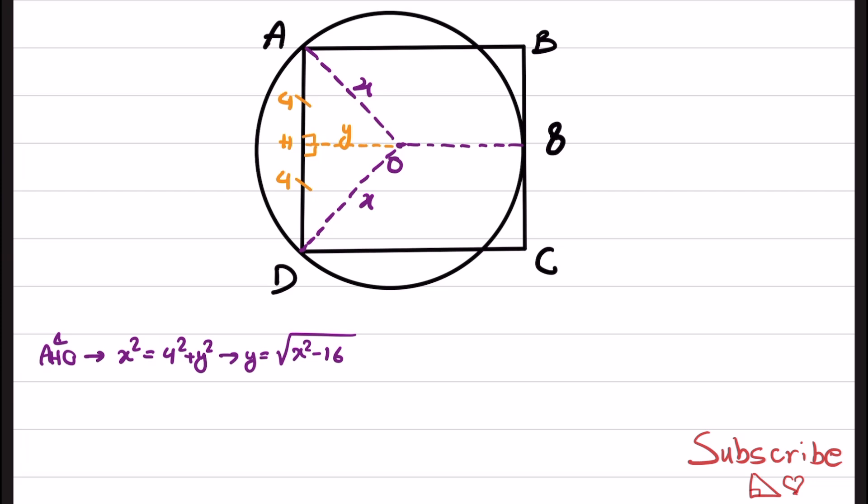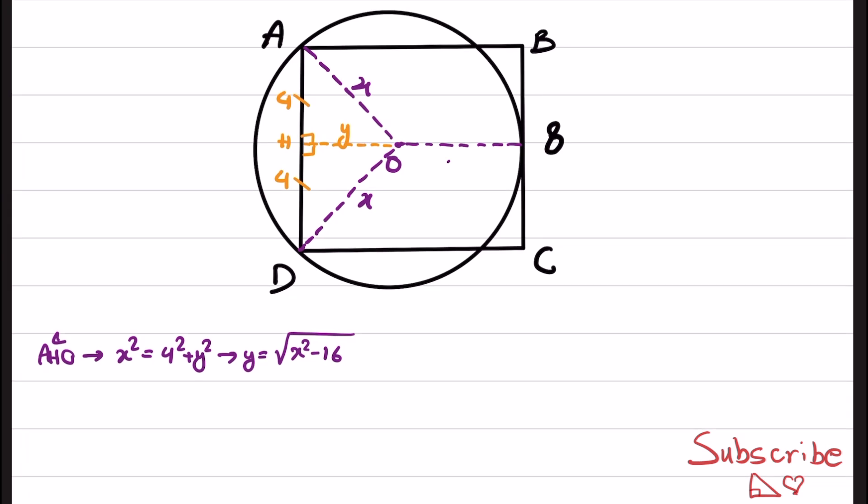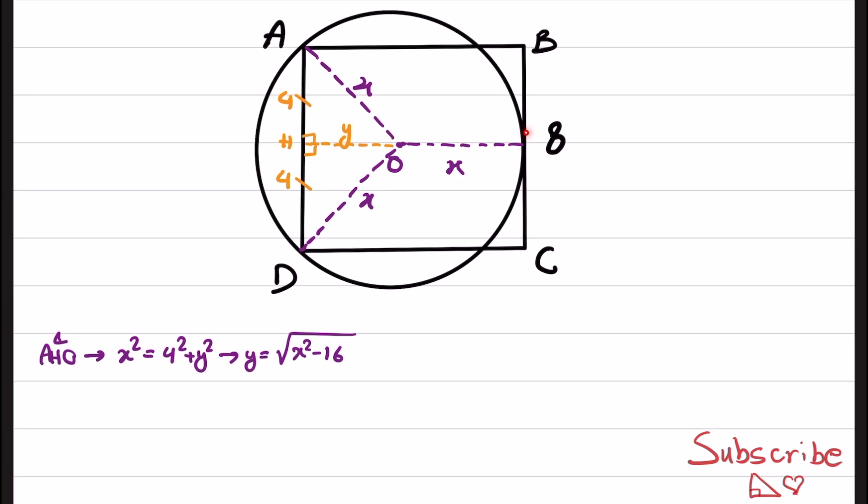And another relation that we have here, we know that because this is radius, this part is also radius, so we have X here as well. And since we have 4 right angles here, this shape is basically a rectangle, and this side is equal to this side. We know that AB is equal to 8, and another equation that we have is that X plus Y is equal to 8.